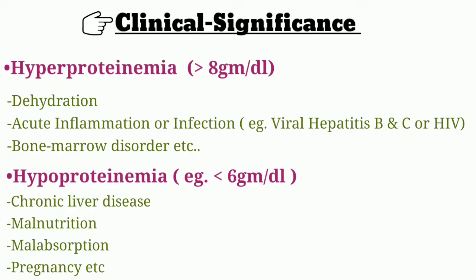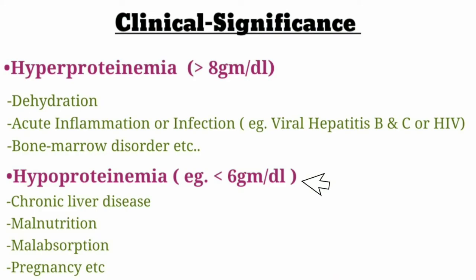Clinical significance: if proteins are present at more than 8 grams per deciliter, the condition is called hyperproteinemia. Causes of hyperproteinemia include dehydration, acute inflammation or infection such as viral hepatitis B and C or HIV, and bone marrow disorders. If proteins are present at less than 6 grams per deciliter, the condition is called hypoproteinemia. Causes include chronic liver disease, malnutrition, malabsorption, and pregnancy.